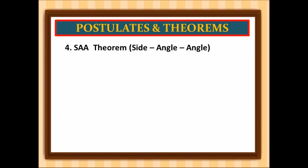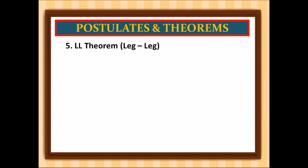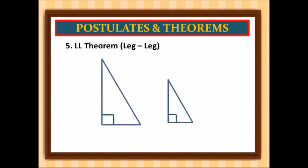For the fourth one, the side-angle-angle theorem, we can use this only if the side-angle-angle of the first triangle is similar to the side-angle-angle of the second triangle. For the fifth one, the leg-leg theorem — this is for right triangles — we can use this only if the two legs of the first triangle are similar to the two legs of another right triangle.